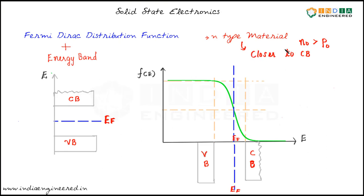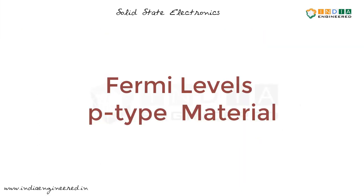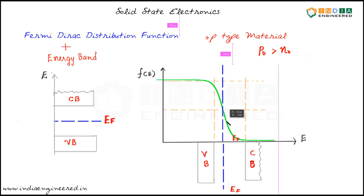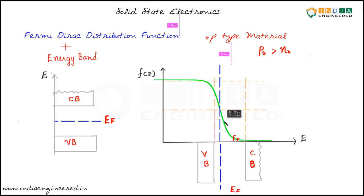Now let's take a look at p-type material. In the case of p-type material, the number of holes in the valence band is greater than the number of electrons in the conduction band. By following a similar argument as we did for n-type material, we can say that the Fermi level should lie closer to the valence band.